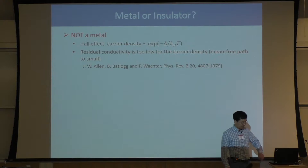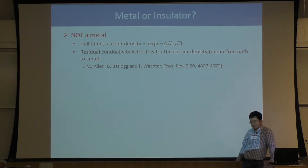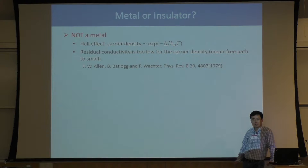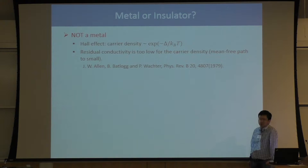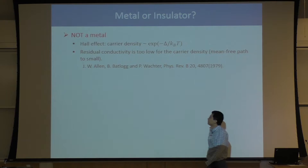The key experiment telling us this is an insulator was done by my colleague Jim Allen. He was confused — it's a very simple compound, but people didn't know whether it's metal or insulator. So he decided to ask a theorist for help — he asked P.W. Anderson. Anderson gave him a solution in basically one sentence: if you can't determine whether it's metal or insulator, you should measure the Hall conductivity. And that's what Jim did.